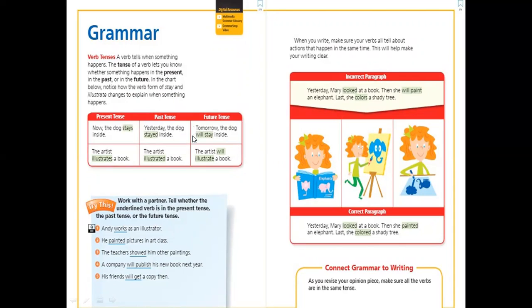Past. If I'm talking about something that happened last year, last week, last day, or yesterday, this indicates past tense. Yesterday the dog stayed inside. The artist illustrated a book. Those verbs indicate or tenses indicate that this action happened in the past.